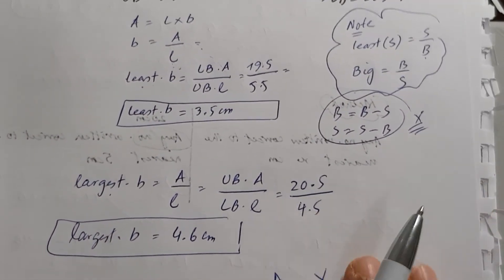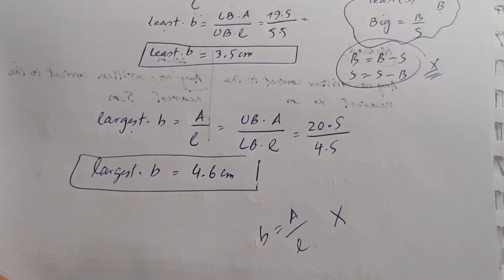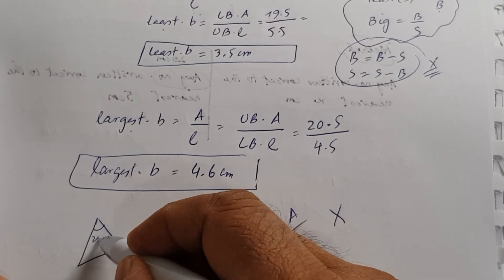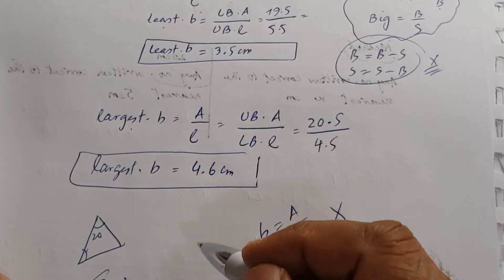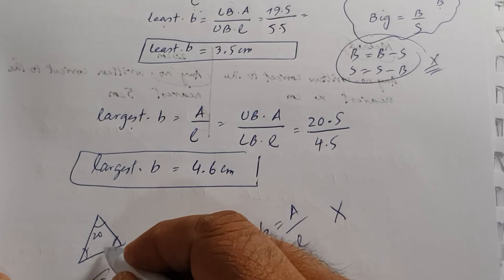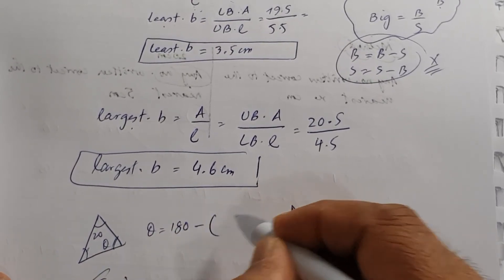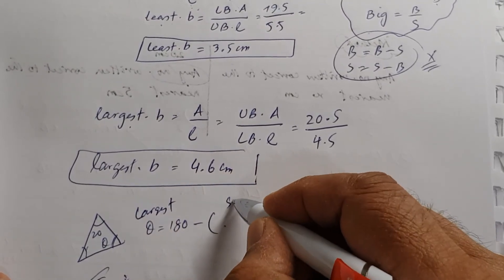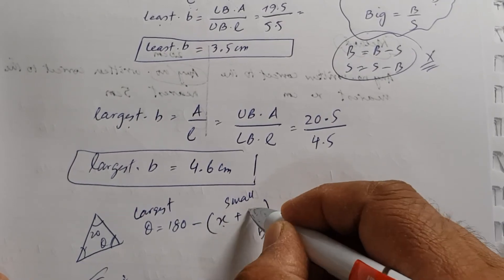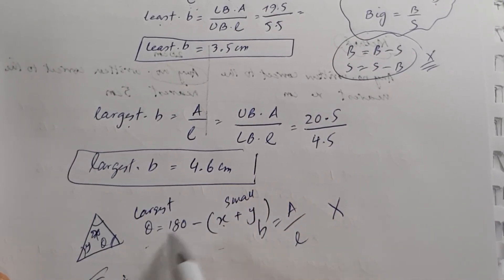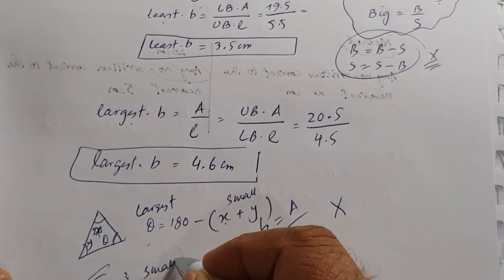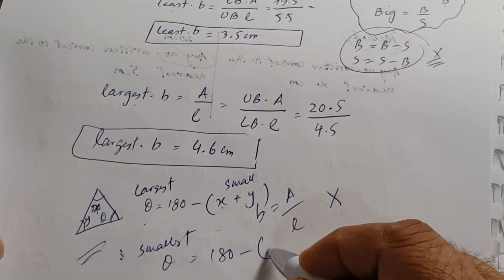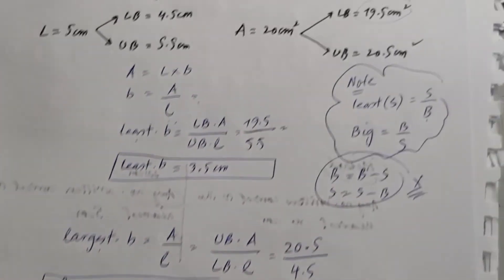One more thing about subtraction: for a triangle where you find angle θ = 180° minus two other angles — if you want the largest angle θ, subtract the smallest possible values of the other two angles. If you want the smallest angle θ, subtract the largest possible values of the other two angles.